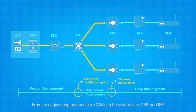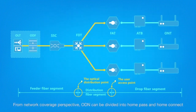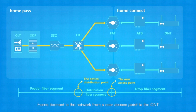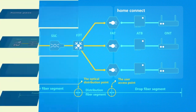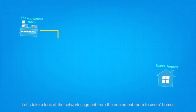From an engineering perspective, ODN can be divided into OSP and ISP. OSP refers to outside plant and ISP refers to inside plant. From a network coverage perspective, ODN can be divided into home pass and home connect. Home pass is the network from the equipment room to the user access point. Home connect is the network from the user access point to the ONT.